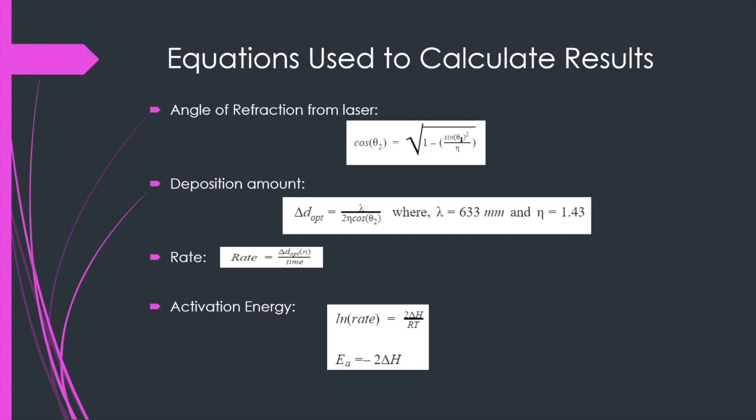To calculate the rate we have rate equals the film thickness times the number of cycles within the sinusoidal waves over time. And lastly for the activation energy we have the natural log of the rate equated to 2 delta H over RT and the activation energy equated to negative 2 delta H.